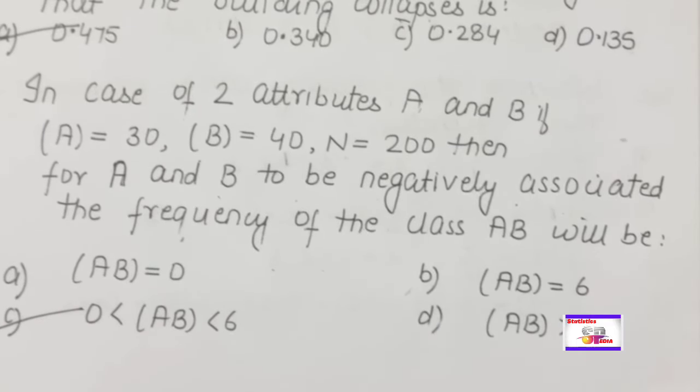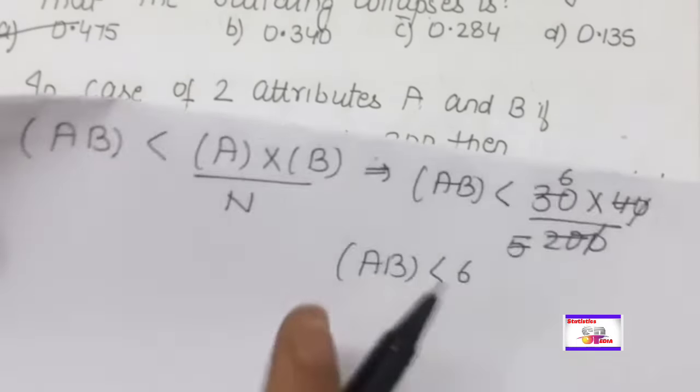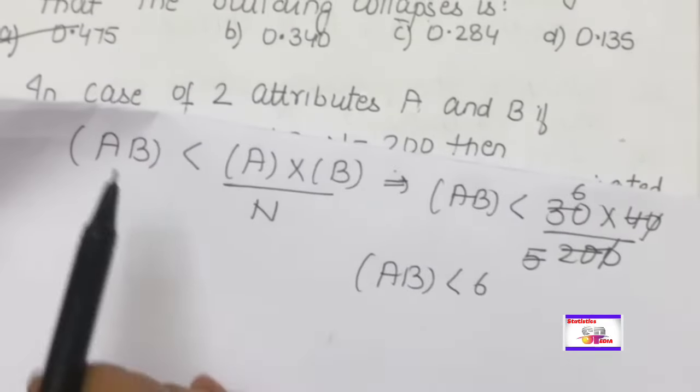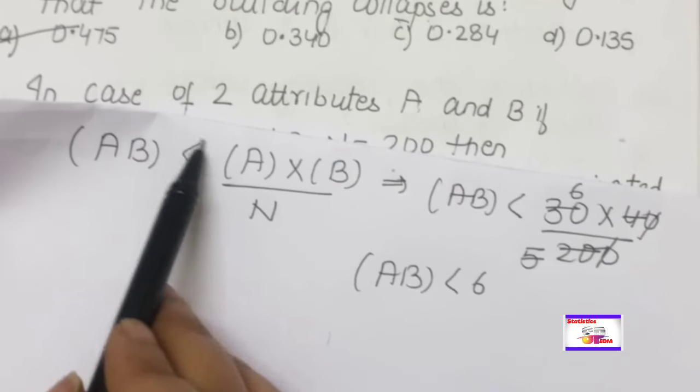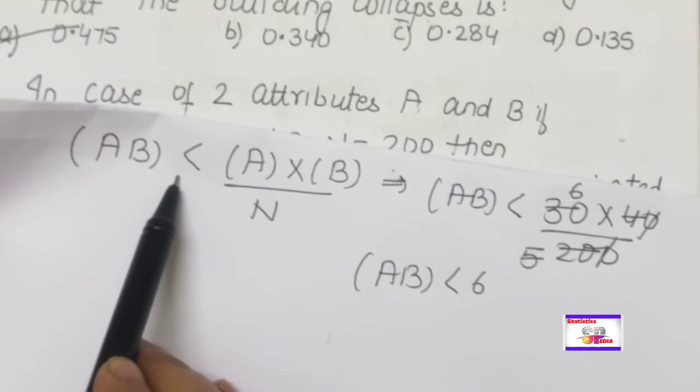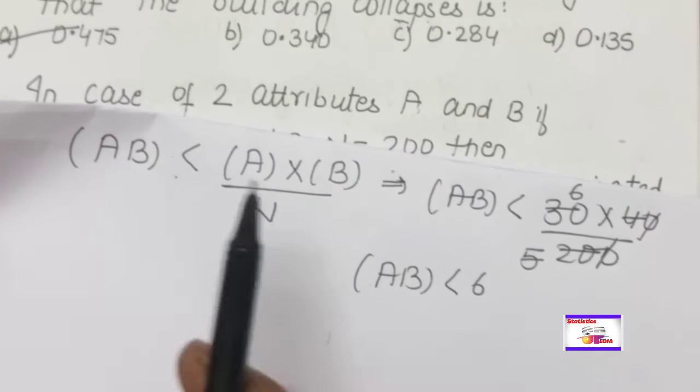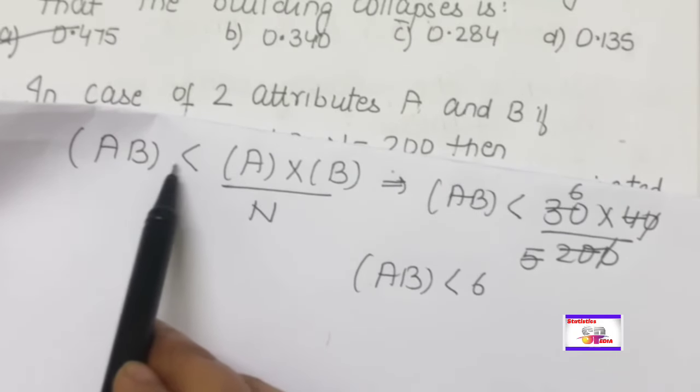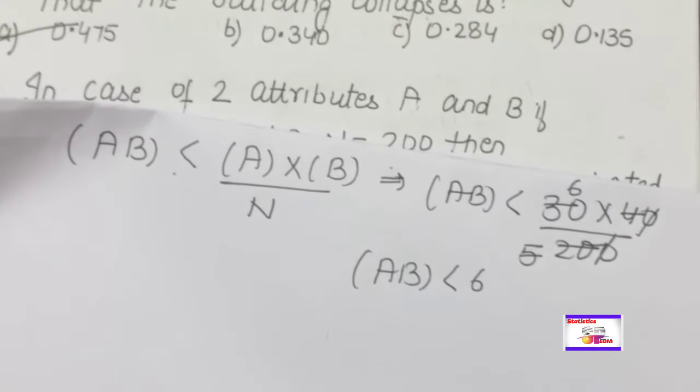Sometimes this type of question also appears. If positively associated, the condition would be greater than; if independent, there would be an equal sign. So the answer is (AB) < 6.